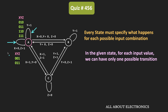That second transition occurs whenever X and Z are 0 and 1, and Y is either 0 or 1. Now if you look at these two transitions, one input combination is common between them. But if you closely observe, for those two overlapping input combinations the machine remains in the same state, so we can say that these two transitions are identical. In fact, across all five input combinations so far, the machine remains in state A.